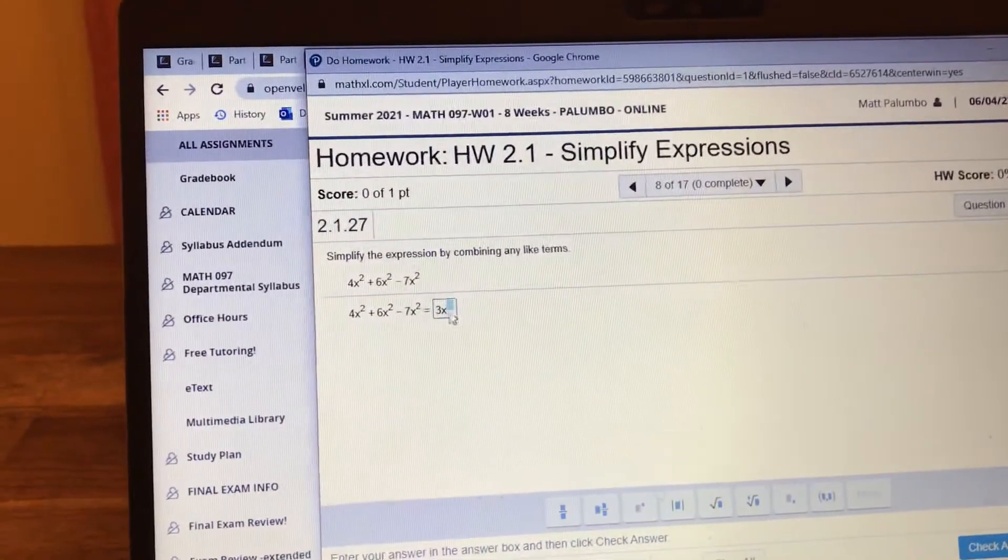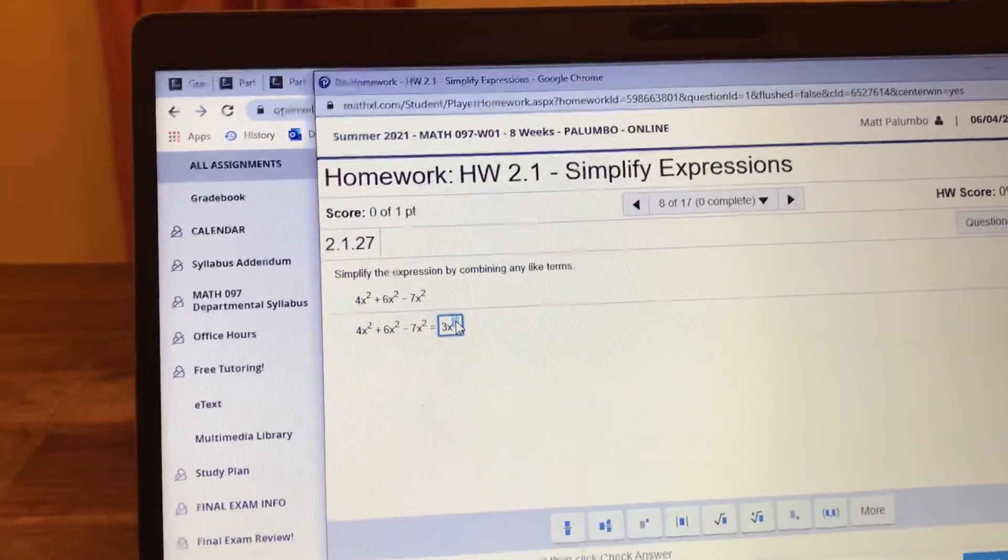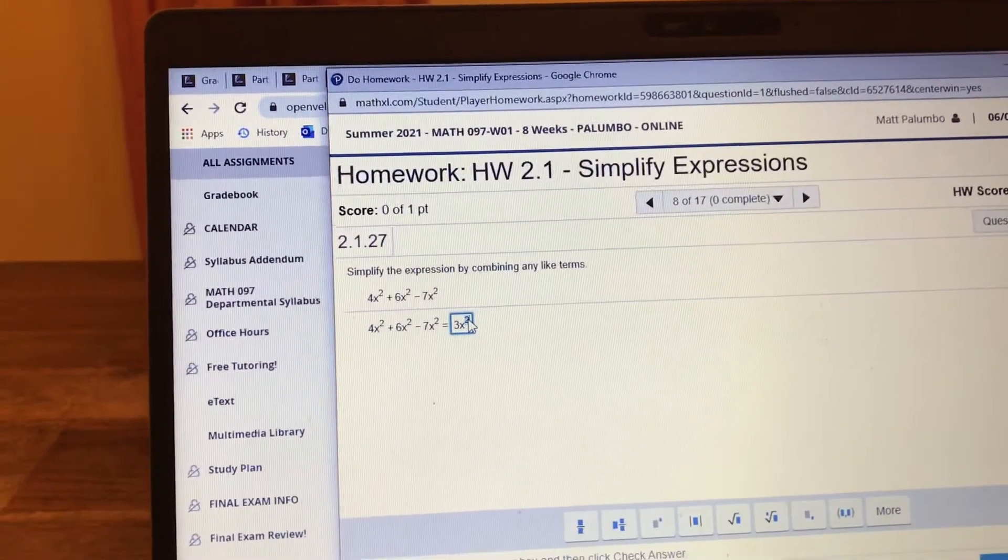In that box up there, you're just going to click and type in a 2. And if you need to get out of it, you can do the tab to the right.